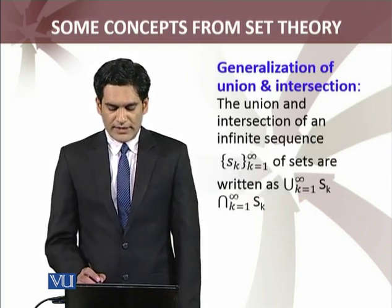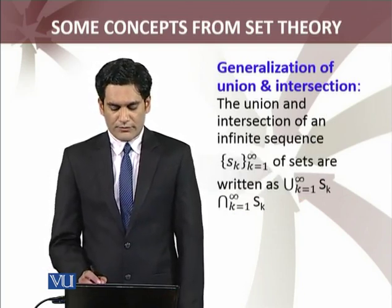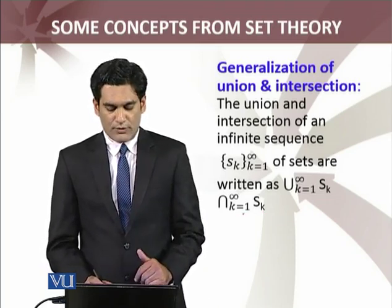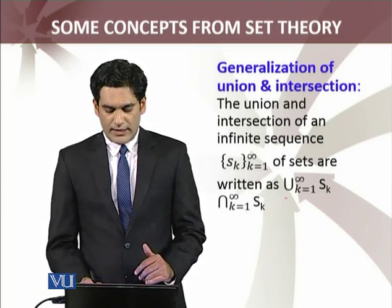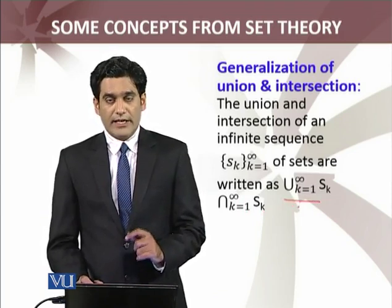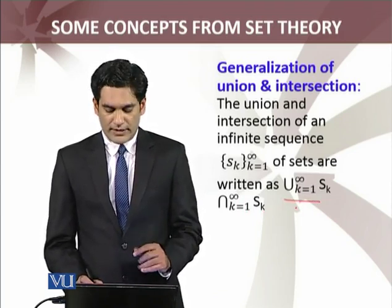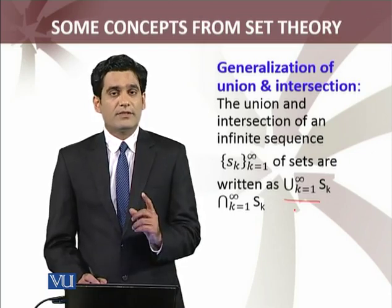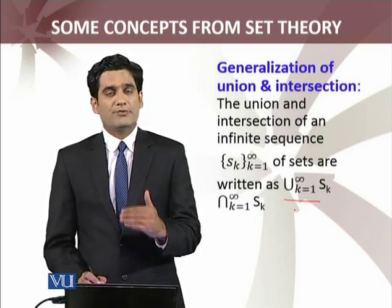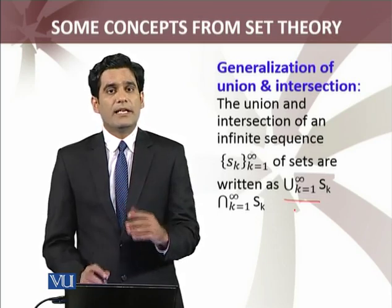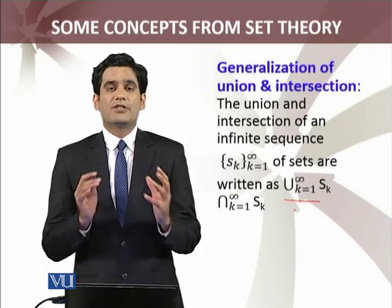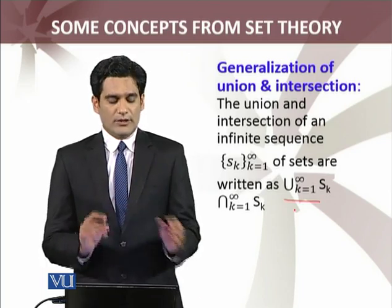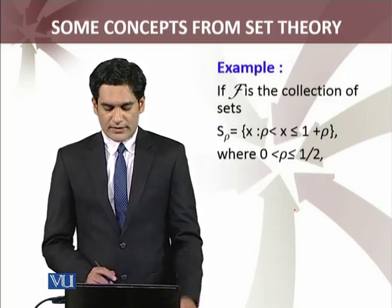The union and intersection of an infinite sequence of sets — पहले finite था, अब infinite sequence है. k=1 to infinity है, union k=1 to infinity है. अब ये union और intersection में sets finite नहीं हैं. उससे पहले मैंने more generalized बताया — जिसमें uncountable, finite, infinite, and uncountable collection of sets हो सकती है.